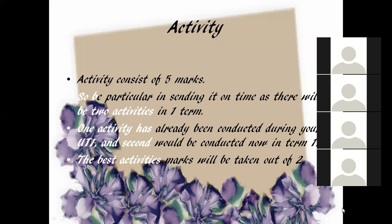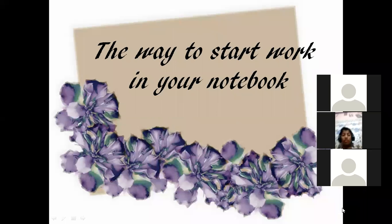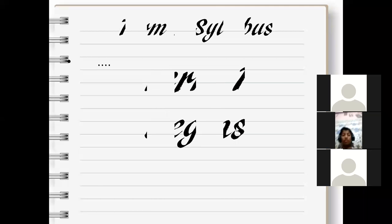I was talking about activity. We used to have practicals earlier — similarly, we will follow that pattern. You will be asked to do activity in some other way, and that will carry five marks. We will have two activities in one term, and the best one will be counted. For example, if you get four marks in one activity and three in another, the four marks will be counted. So it is very important to do all the activities. This is the way you have to start working in your notebook — write 'Term 1 Begins' and then 'Term 1 Syllabus.'